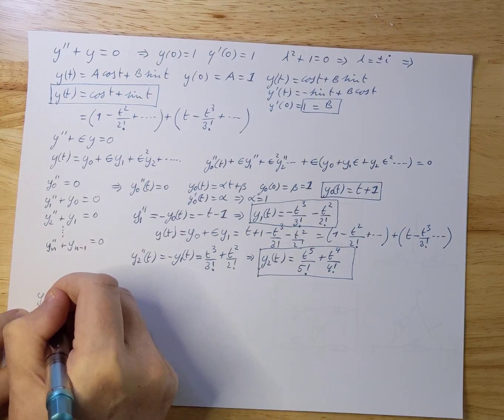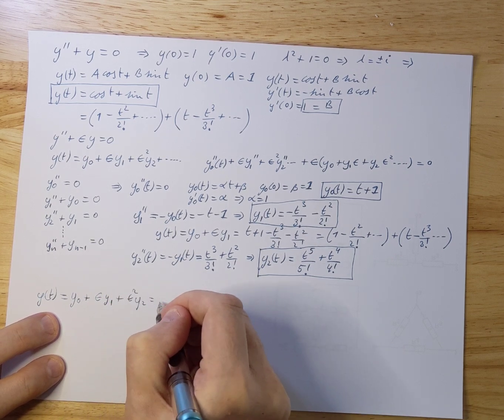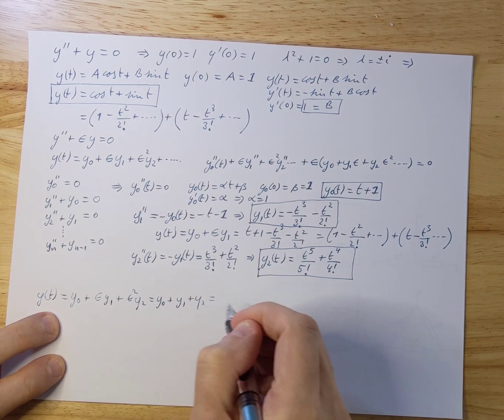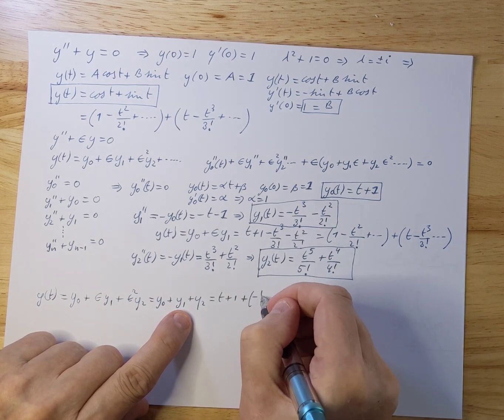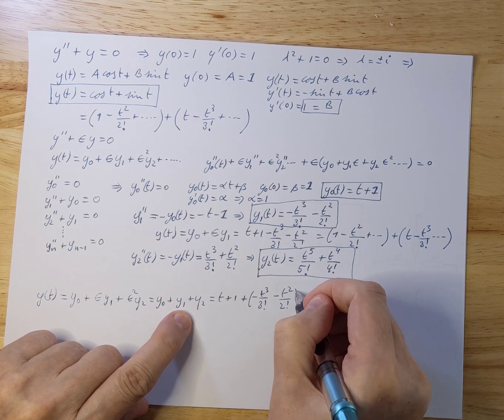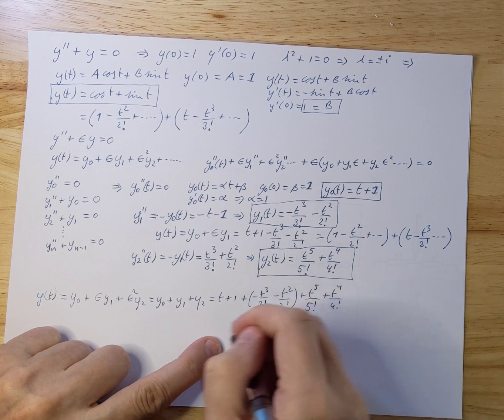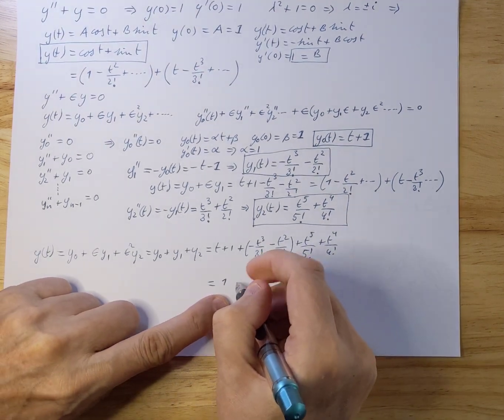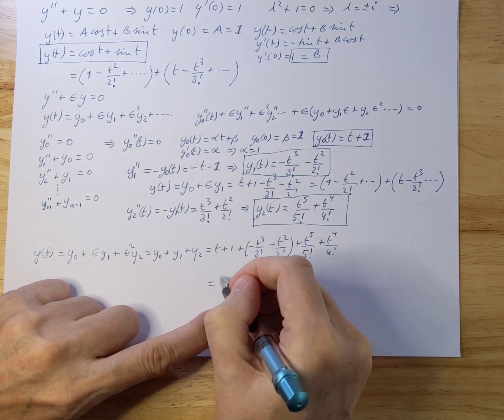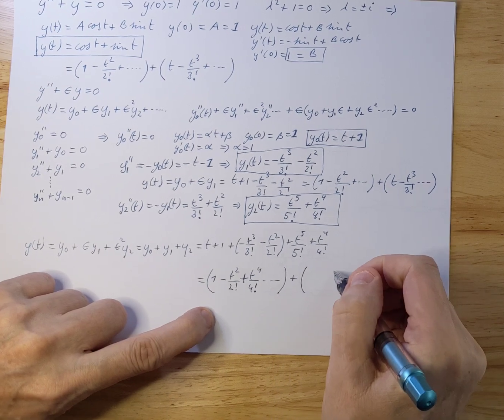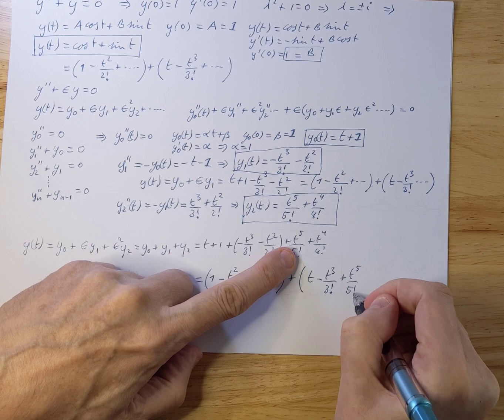So now we can go back to y(t), which is y₀ plus epsilon y₁ plus epsilon squared y₂. Epsilon is 1, so that is t plus 1 minus t³ over 3 factorial minus t² over 2 factorial plus t⁵ over 5 factorial plus t⁴ over 4 factorial. And if you write that out in a slightly different form again, you get 1 minus t² over 2 factorial plus t⁴ over 4 factorial plus maybe more terms later on, plus t minus t³ over 3 factorial and then the one that's remaining is t⁵ over 5 factorial, plus maybe other terms.